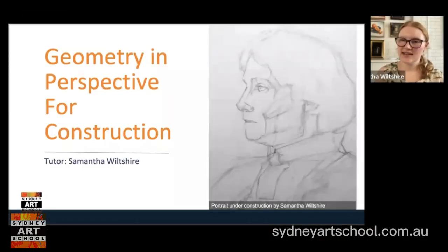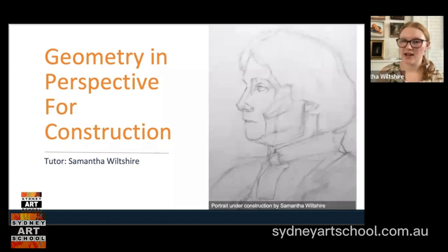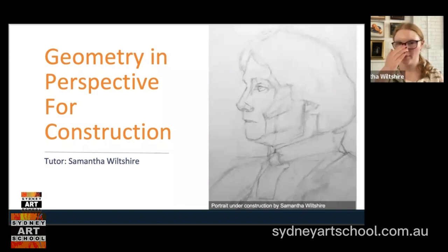In the image on the right on my slide I have a portrait that I was working on under construction, where I've combined using a simple geometry approach and a geometry in perspective approach. Around the nose and the eye socket in particular you can see that I've really thought about the top and the sides of the nose and the fact that the eye socket is concave and where the sides of it are, so that I can understand how it turns in space.